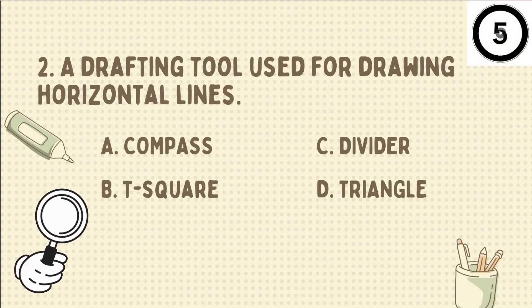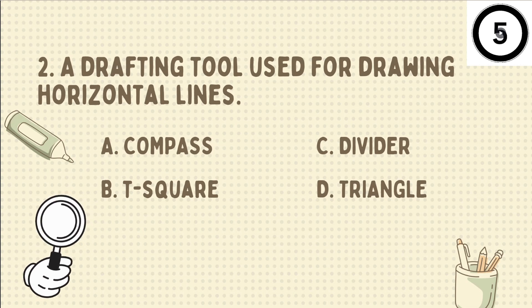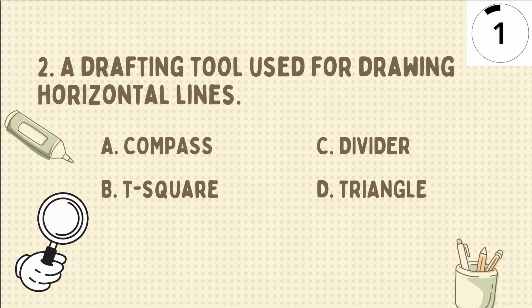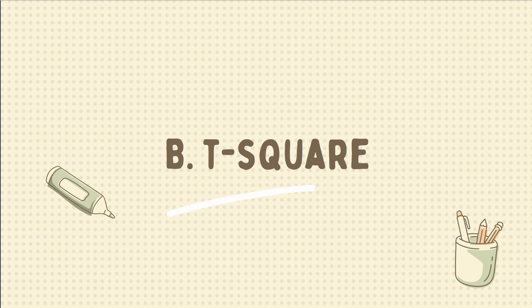Second one, a drafting tool used for drawing horizontal lines. Is it A, compass, B, T-square, C, triangle, D, scale. Now what's your answer? Very good! It's letter B, T-square.